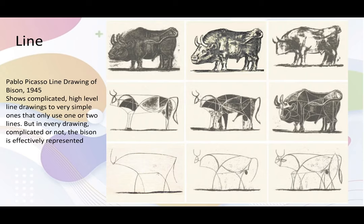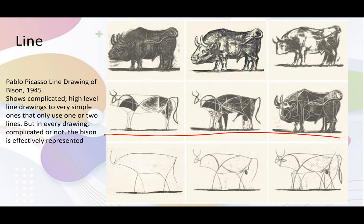I have included a line drawing by Pablo Picasso. These several line drawings are extremely helpful because they show how a complex subject, that is the bison, can be represented with only a few very simple lines. Further, line drawings can have several lines, such as the ones you see in the middle row, but also can have very few lines, such as the image on the left. But in each drawing you can clearly see Pablo Picasso's thinking and his representation of the bison.